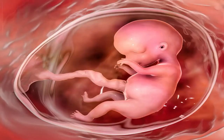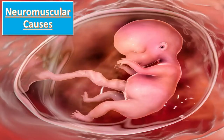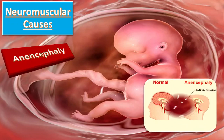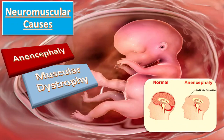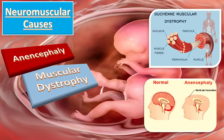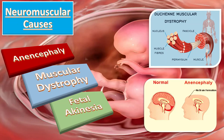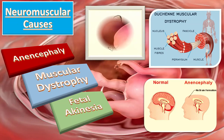The neuromuscular causes of polyhydramnios include anencephaly, muscular dystrophy, and fetal akinesia.